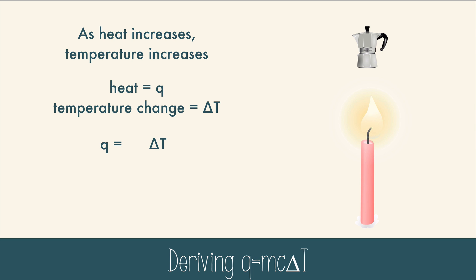But there's something else that matters about the percolator. What if we had a much bigger percolator? Would the same amount of heat change the temperature the same amount as the small percolator? Because there are more particles that have to get moving faster, it will require more heat to change the temperature the same amount. This means heat and mass are directly related as well. So mass, or m, needs to go on the opposite side of heat.